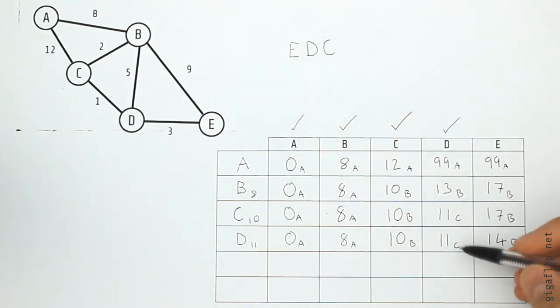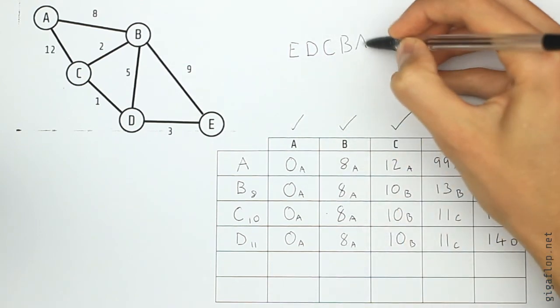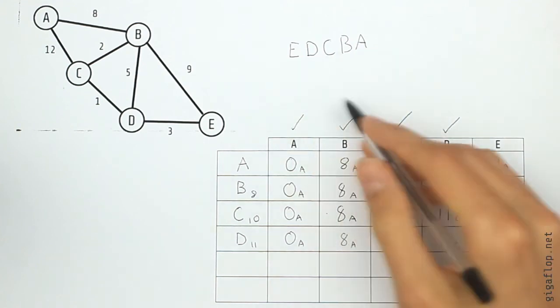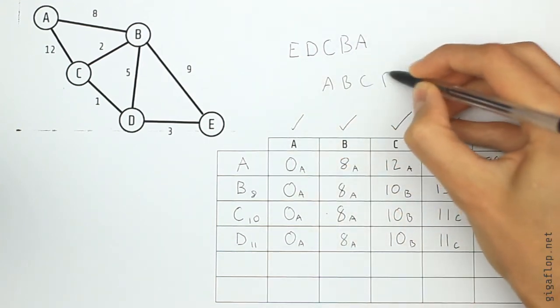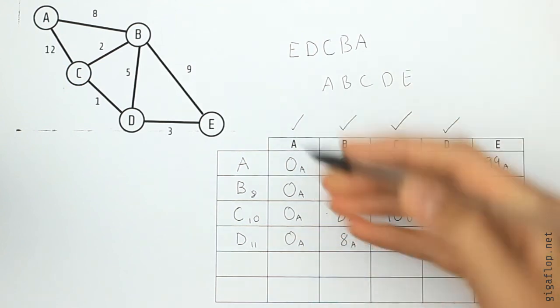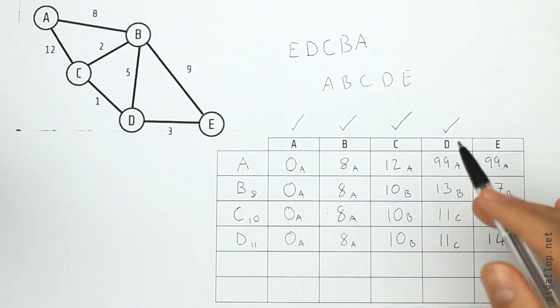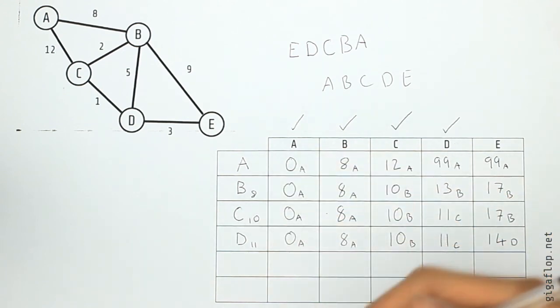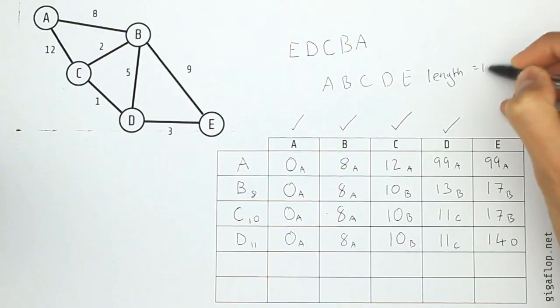Again, we look at how we got to C. Well, we got there using B. So we write down B. How did we get to B from A? And A is where we started. So we just reverse this to get our route. That's A, B, C, D, E. As it happens on this network, the shortest route is alphabetical order. That won't always happen. It just happens to be that that is the case on this network. And we know that has a length of fourteen.